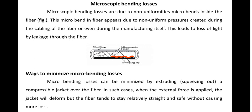To minimize microscopic bending loss, the core can be straightened out by squeezing it. The fiber cable must be examined, and some automated machinery can look into these micro-bends to minimize them.